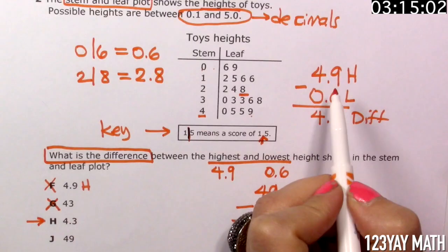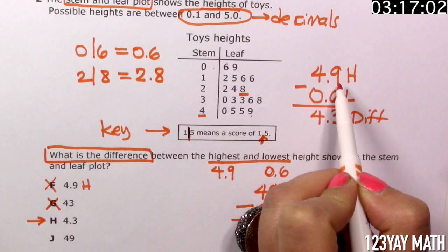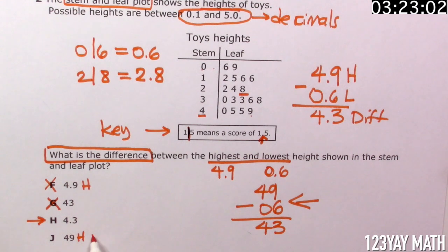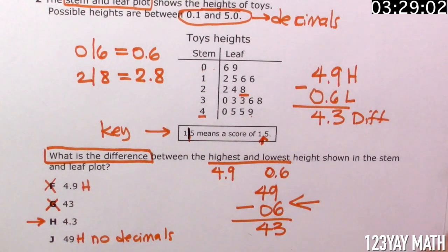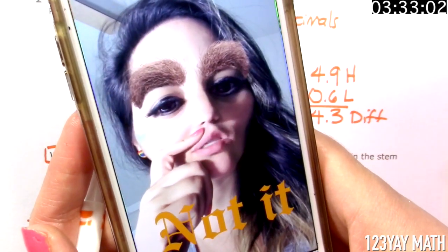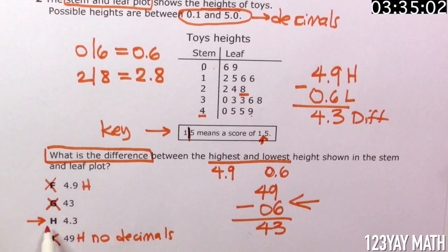Is it 49? I see that this is 4.9, so this is like if somebody didn't read the key and only chose the highest score. This is the highest and no decimals. Should we choose J? This looks hairy. I think that's not the right answer. Definitely not.